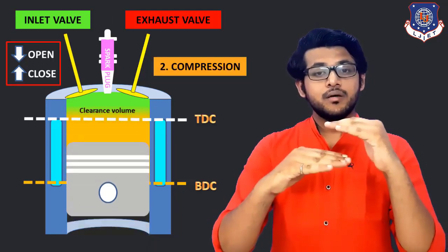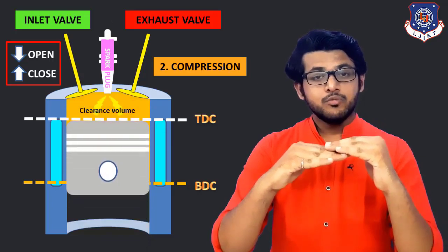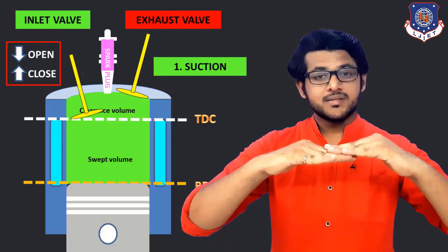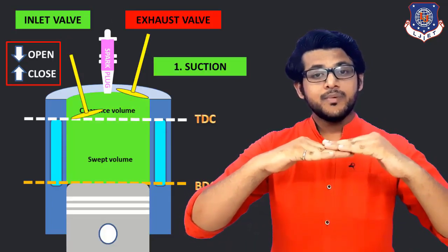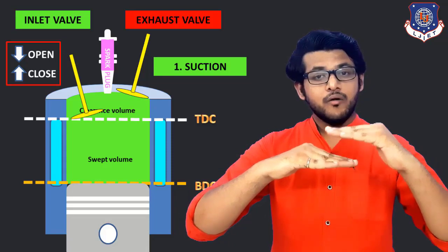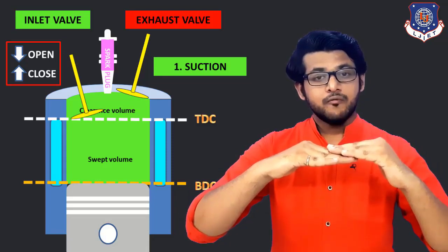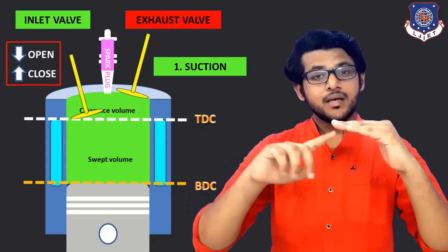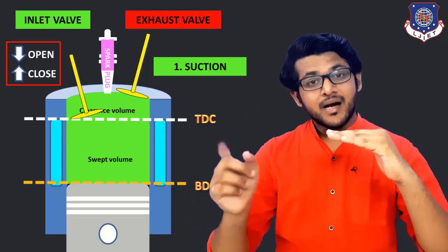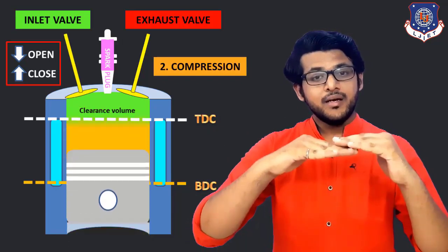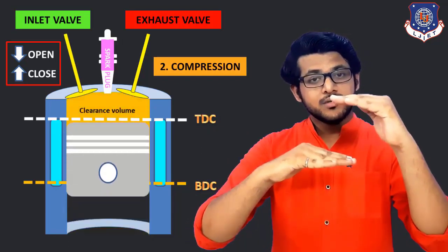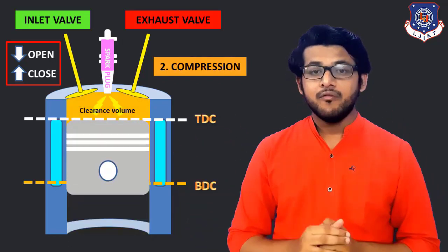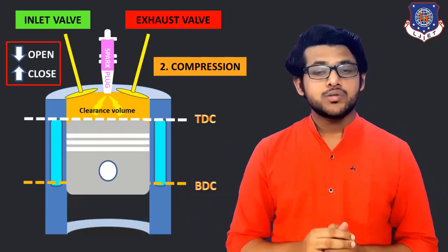Simply, the inlet valve will not be exactly closed at BDC. It will actually start closing from BDC and when it reaches some degree of crankshaft rotation, it will then close. So when the piston is moving upwards and leaving BDC, the inlet valve starts closing, and after a little more movement, the inlet valve will be fully closed.